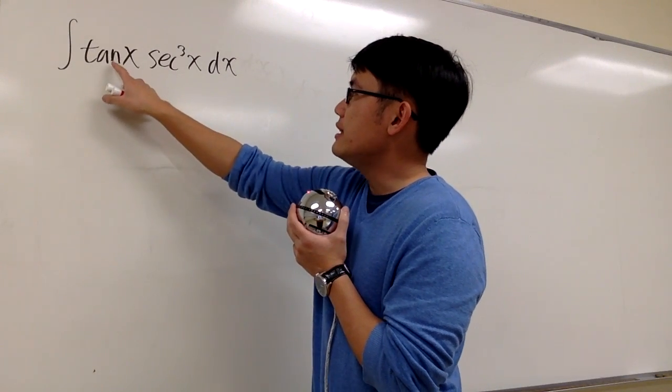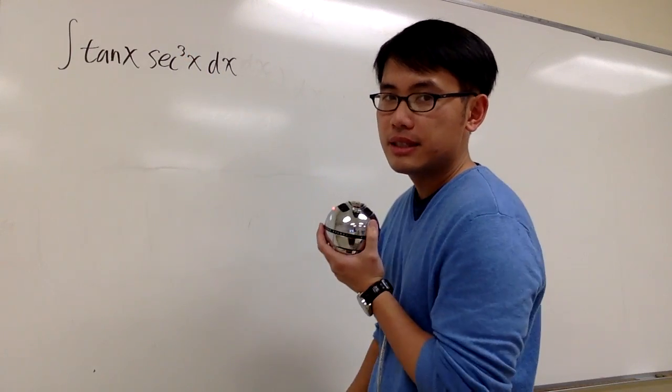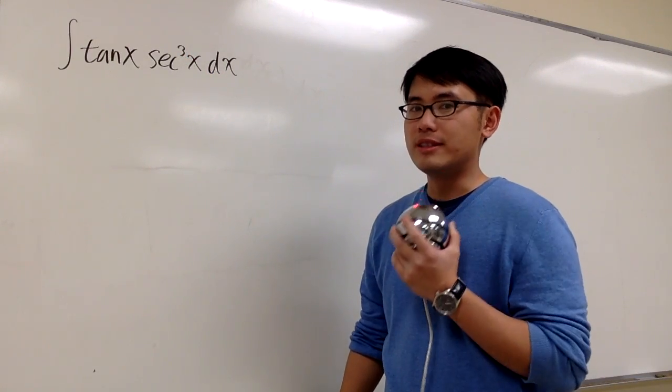The idea is that this is tangent to a first power, secant to a third power, and this is an odd number power, right? Well, this is a trick.